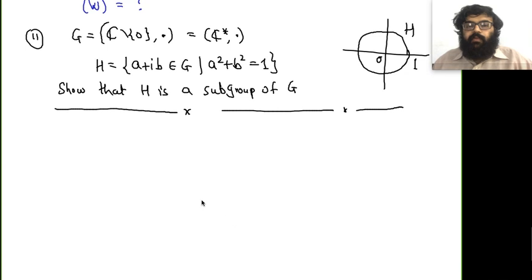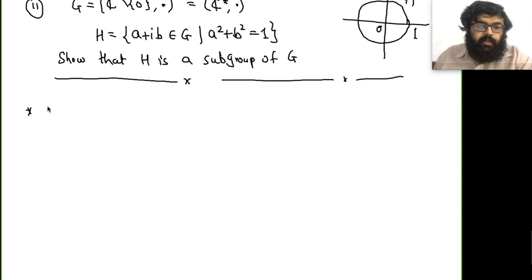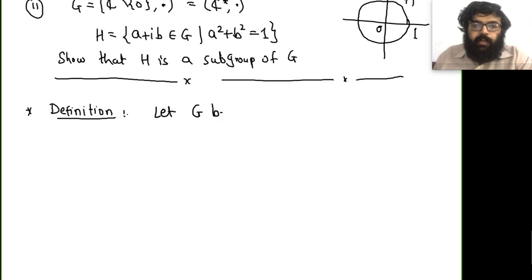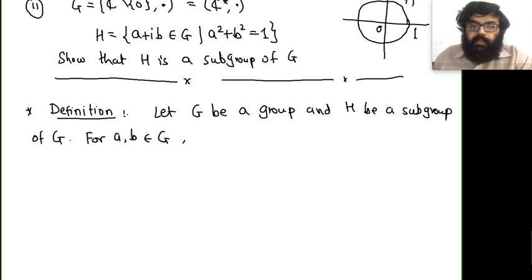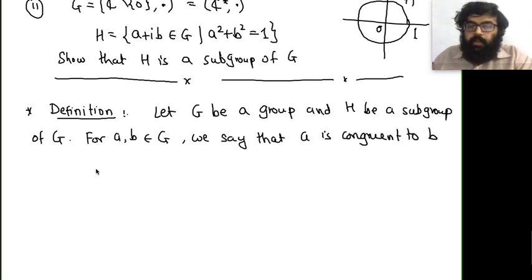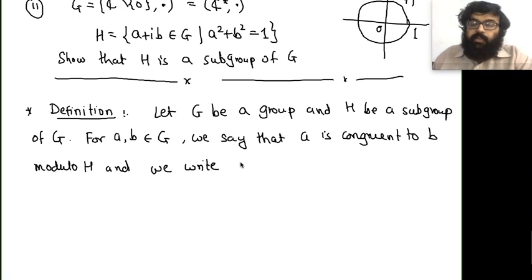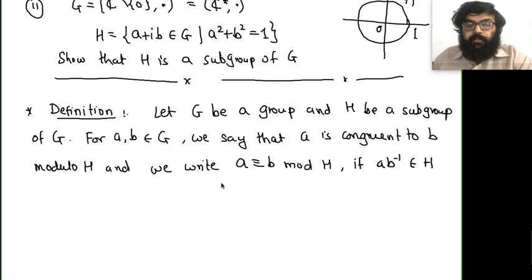Now let us define an equivalence relation. Let G be a group and H be a subgroup of G. For any two elements a, b ∈ G, we say a is congruent to b modulo H, written a ≡ b (mod H), if ab⁻¹ ∈ H.